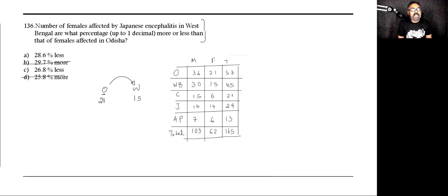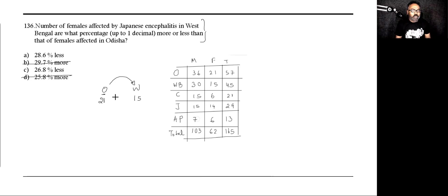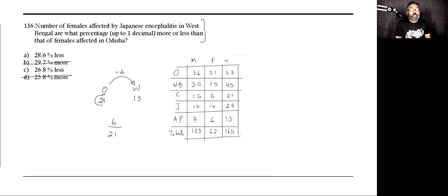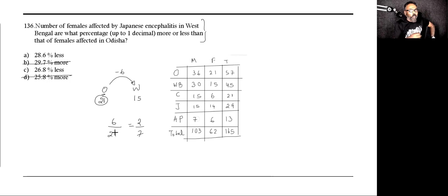So let's check that. How much less — 6 less? Yes, 6 less. So all we have to do is 6 divided by 21. We can divide both by 3, so it'll be 2 divided by 7. I know for a fact that 1 by 7 is 14.28%, so 2 by 7 will be 28.6%. Done.